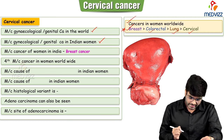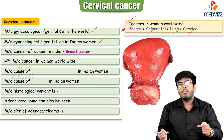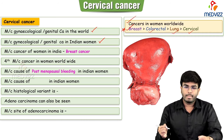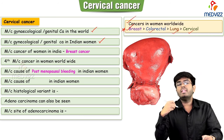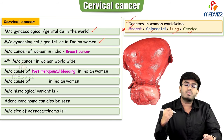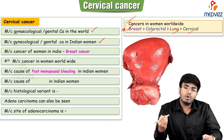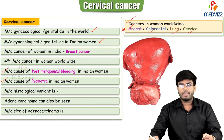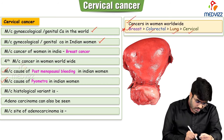Cervical cancer is not only the most common gynecological cancer, but it is also the most common cause of postmenopausal bleeding in Indian women. It is also the most common cause of pyometra. Please note these two important points.